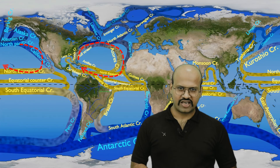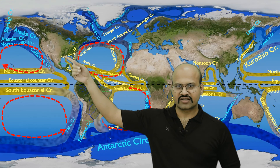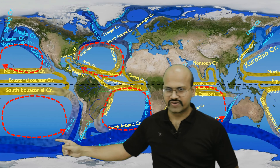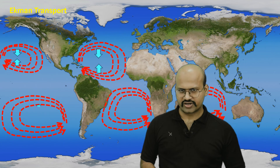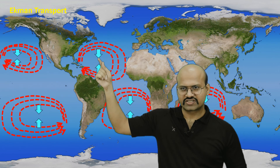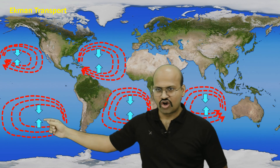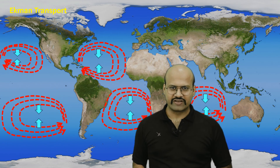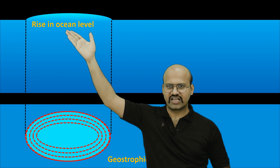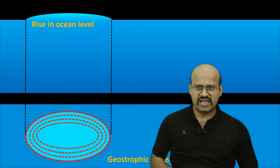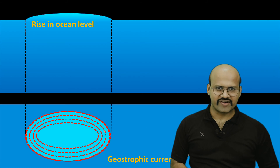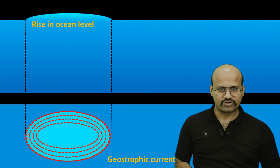Looking at global ocean currents, we can see large circular current systems called gyres — moving clockwise in the northern hemisphere and anticlockwise in the southern hemisphere. Ekman transport causes the net movement of water toward the center of each gyre, leading to an accumulation and a physical bulge of water at the center, raising the sea level there. This elevated water surface in turn drives geostrophic flow. A separate video explaining geostrophic currents is linked in the description.